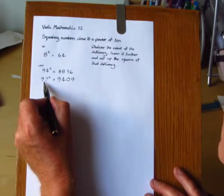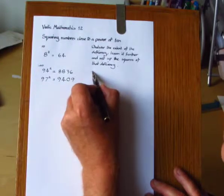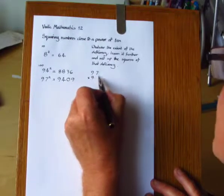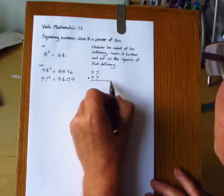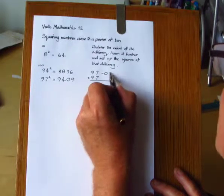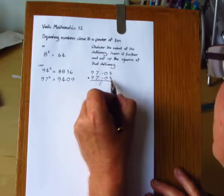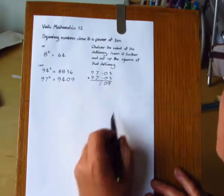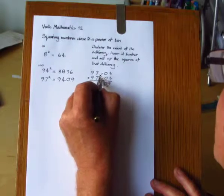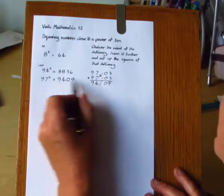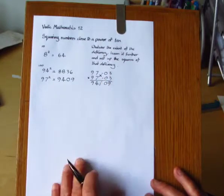And you can compare this with the method of Nicolum multiplication. If we have 97 times 97, in a previous session this was shown. The 2 deficiencies are 03. We multiply these, making 09. And then cross-subtract in either direction, giving 94. So it's really a special case of Nicolum multiplication.